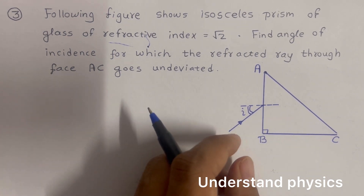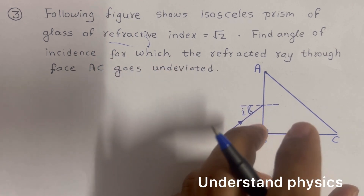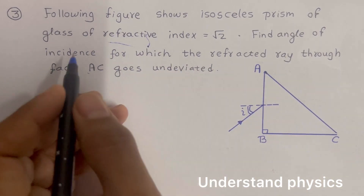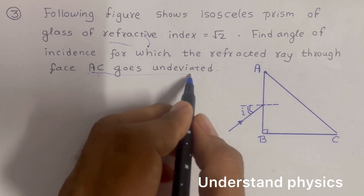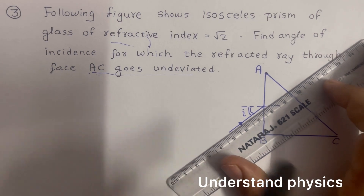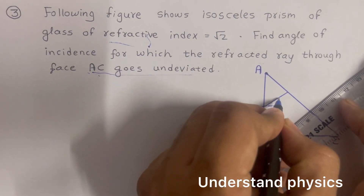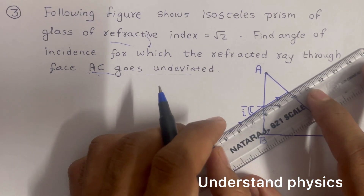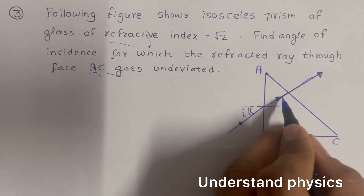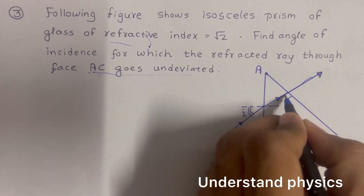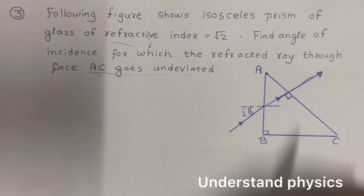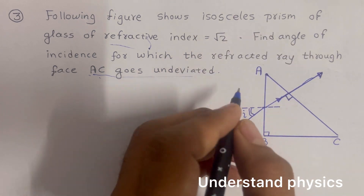Moving to the next question on the prism topic: in this problem we want the emerging ray to go undeviated through face AC. Looking at the diagram, if the ray falls on face AC, for it to go undeviated — that is, without bending — the ray must fall at a 90-degree angle to that face, meaning normal incidence.